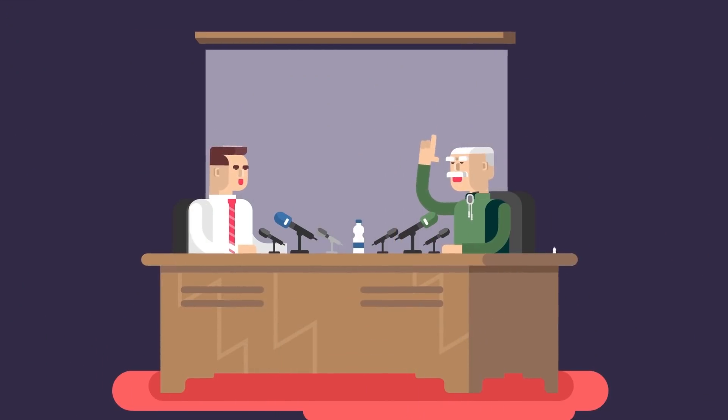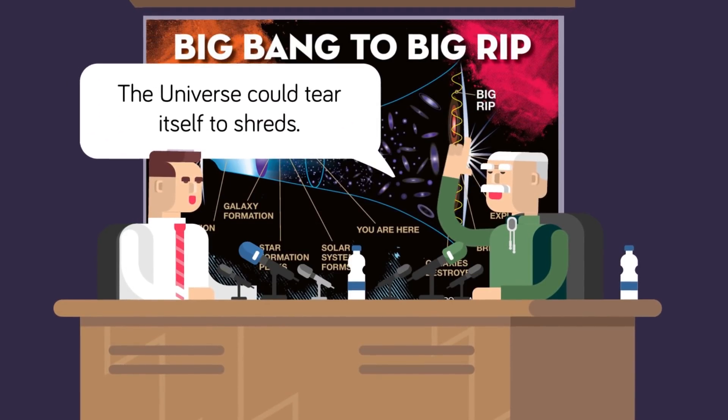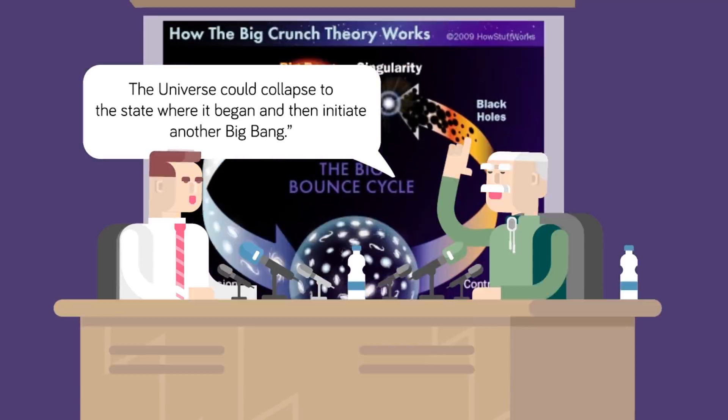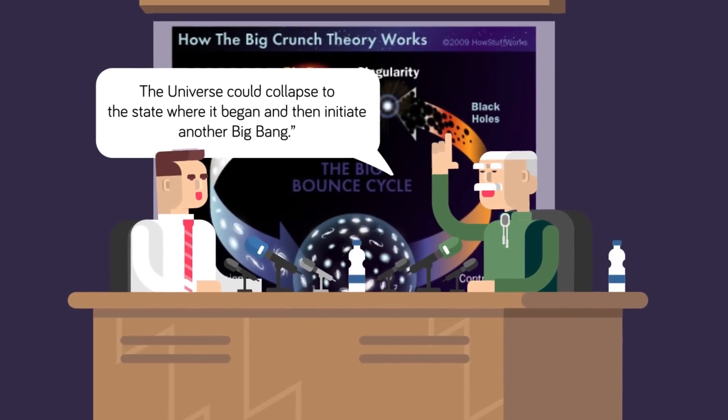The universe as we know it is expanding continually, leading some scientists to predict a big rip hypothesis. This cosmological model predicts all matter in the universe, from the stars and galaxies, to smaller matter like atoms, being progressively torn apart by the expansion of the universe until the big rip occurs.